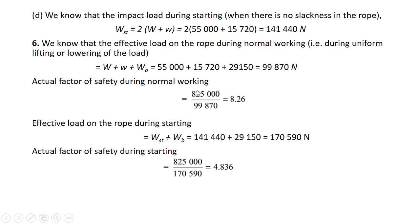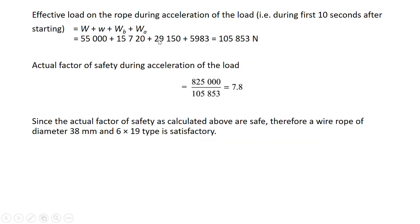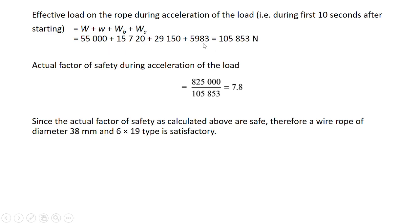The actual factor of safety for normal working condition is determined by dividing the design load by this effective load, which comes out to be 8.26. The effective load during starting is impact load plus bending load, and the factor of safety is again calculated by dividing the design load by this value, giving 4.836. The effective load during acceleration is the sum of W, w, bending load, and load due to acceleration. Dividing the design load by this gives an actual factor of safety of 7.8.